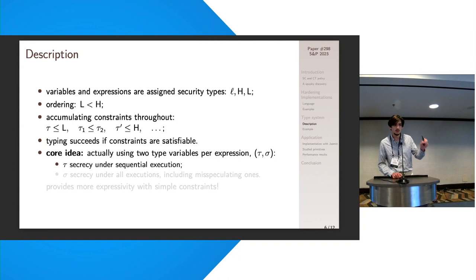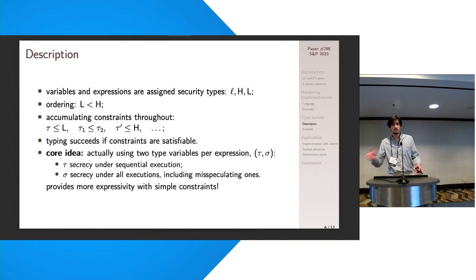But actually the core idea is to not use one, but two types per variable or per expression. The first one, let's call it tau, would be the secrecy we want to assign to that variable during normal sequential execution where everything is going as predicted. And sigma would correspond to the secrecy of the worst case, so typically the secrecy that happens when misspeculating with the processor. And so only using those two types per variable, it actually enhances greatly the expressivity of our type system.